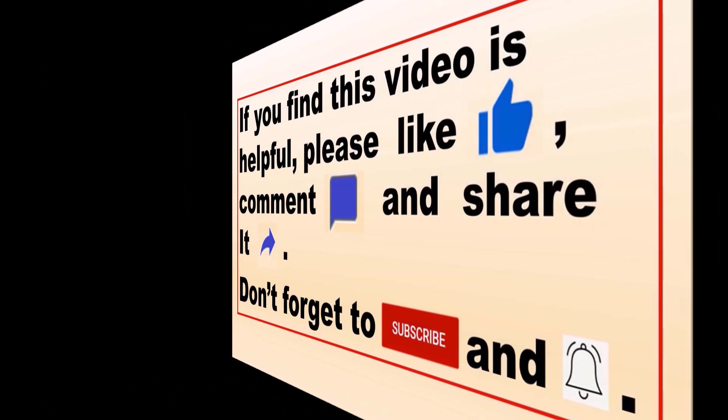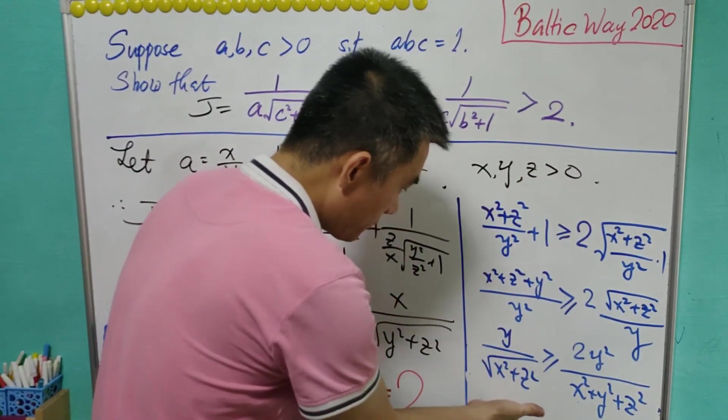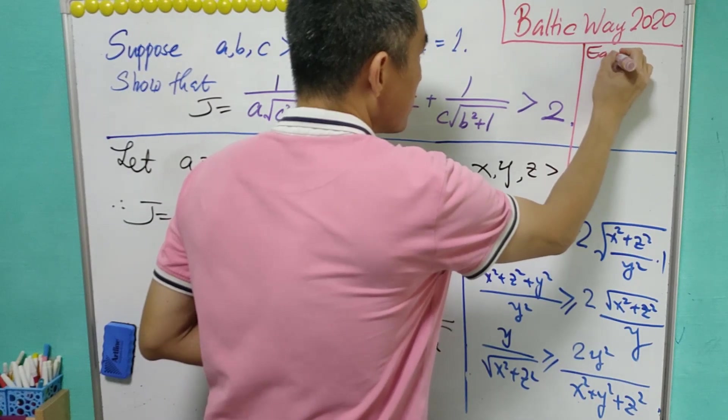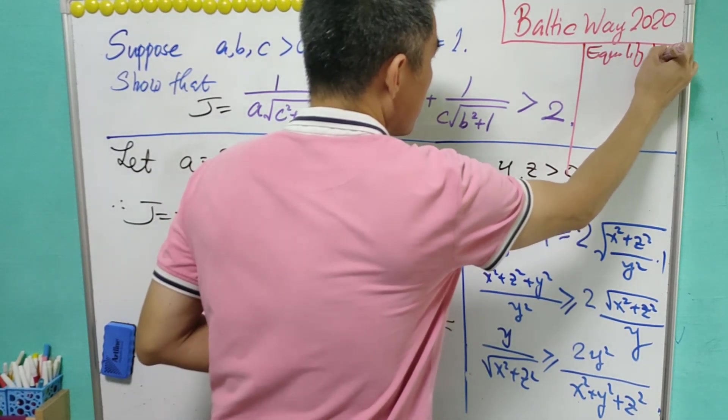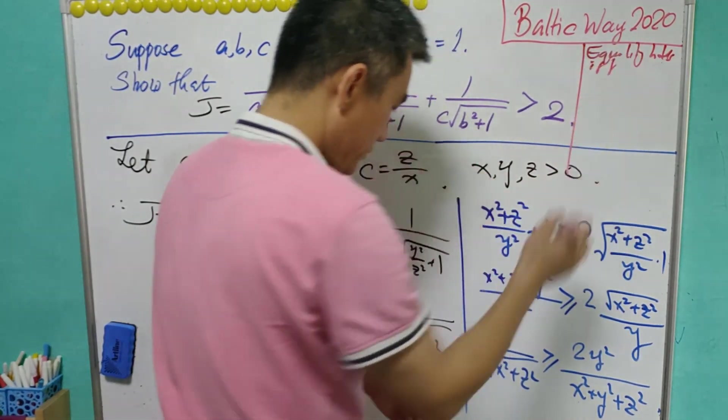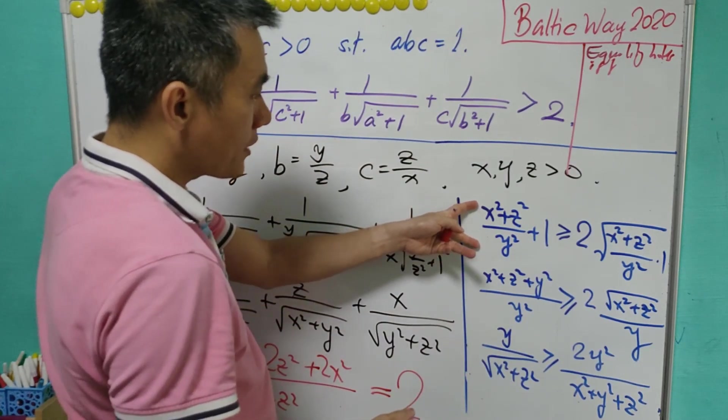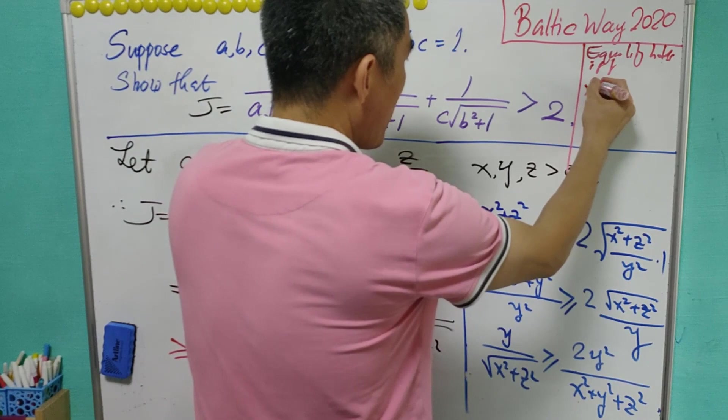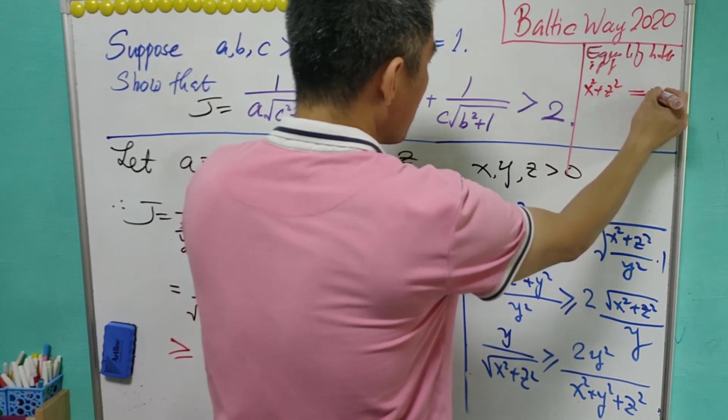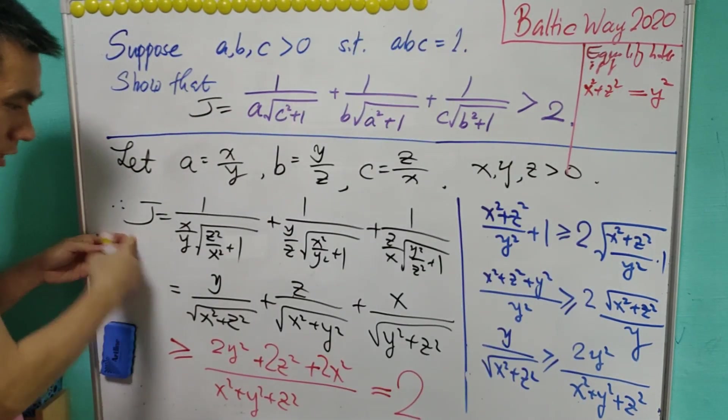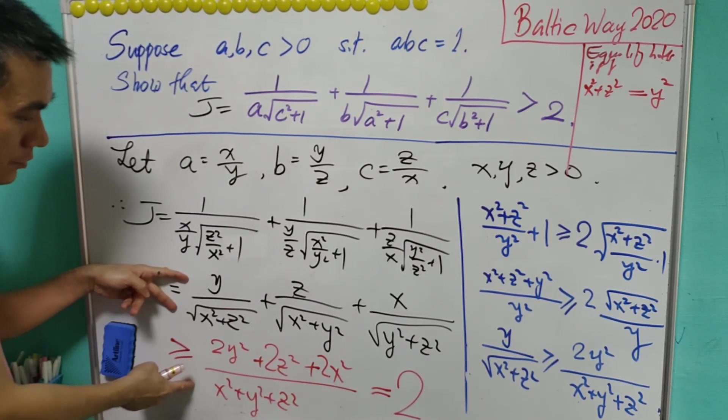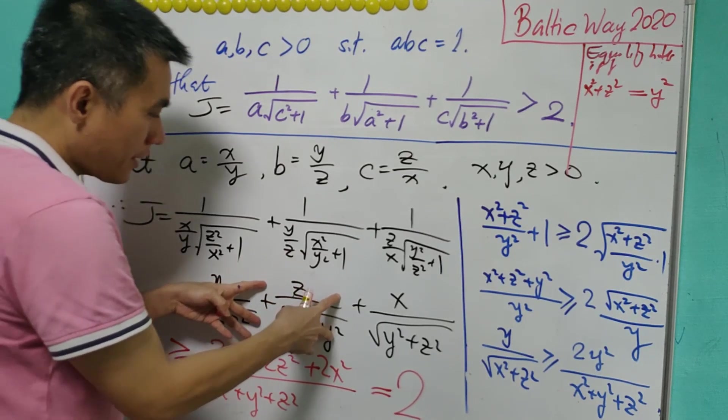For this inequality, the equality holds if and only if (x squared plus z squared) over y squared equals 1, which means that x squared plus z squared equals y squared. But in order to make J equal to 2, not only the first term has the equality hold, we also need to consider the second and the third terms.